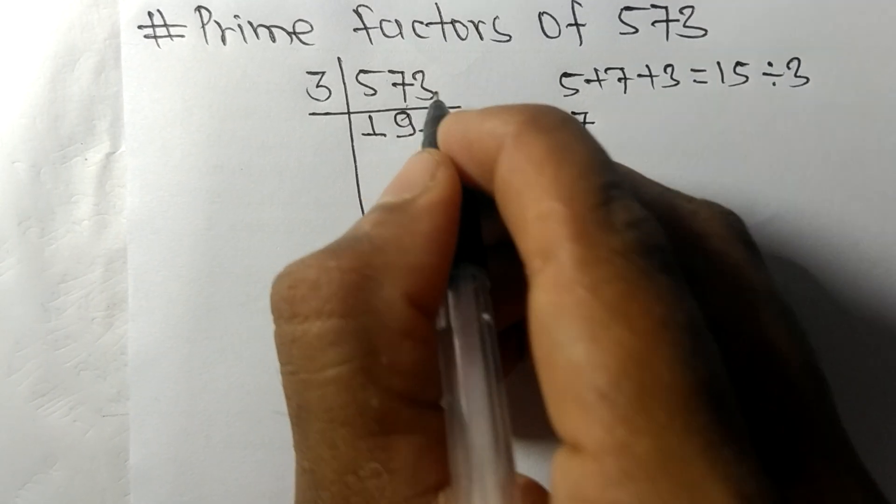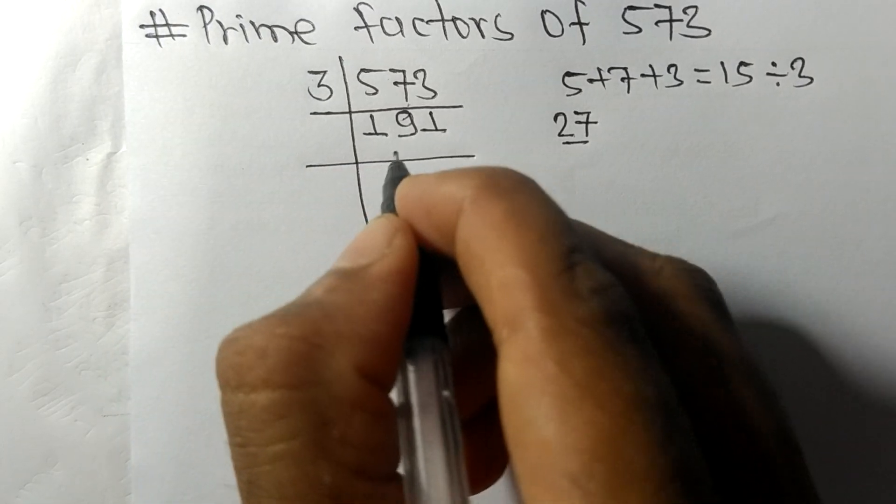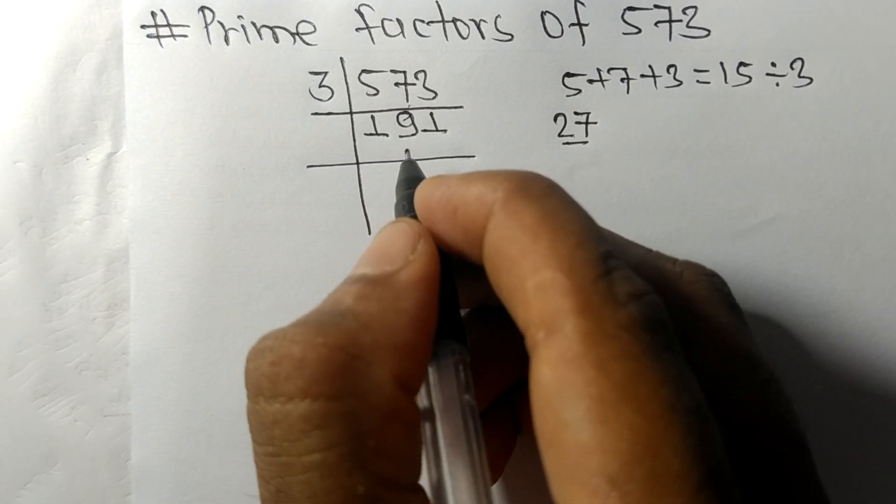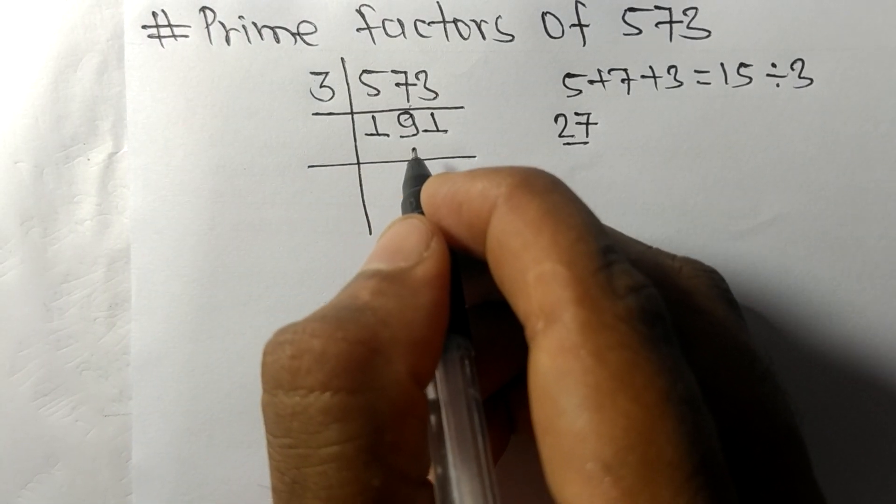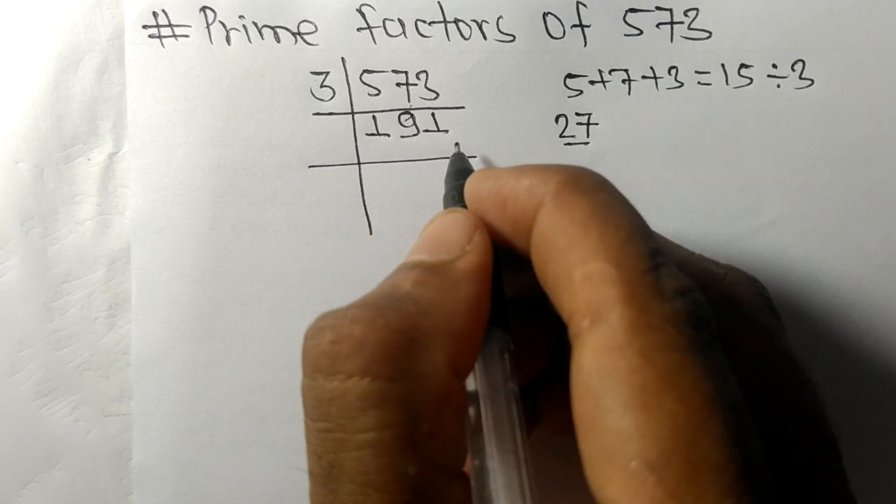So now we got here 191, which is a prime number, so it is divisible by 191 itself.